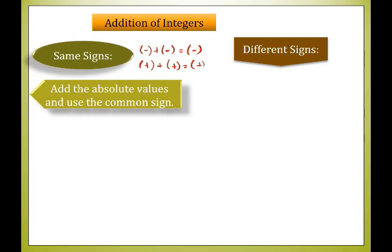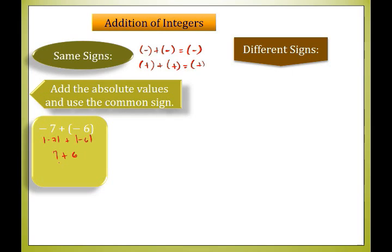Let's have some examples for addition of integers with the same sign. First, negative 7 plus negative 6. We get the absolute values: the absolute value of negative 7 is 7, and the absolute value of negative 6 is 6. Adding them gives 7 plus 6, which equals 13. Since both integers are negative, we use the common sign, so the sum is negative 13.